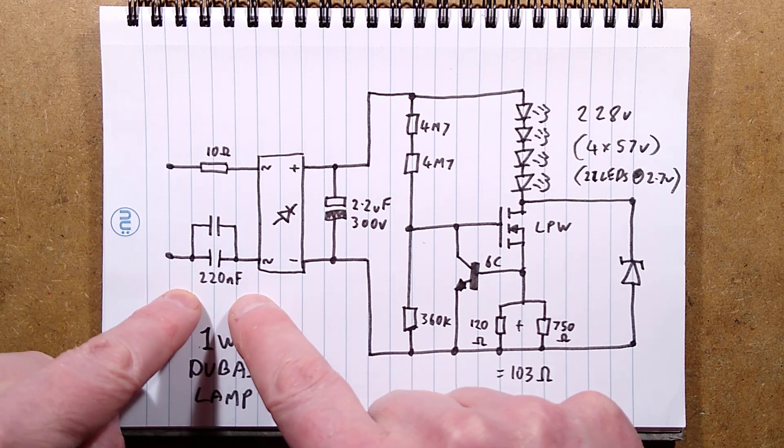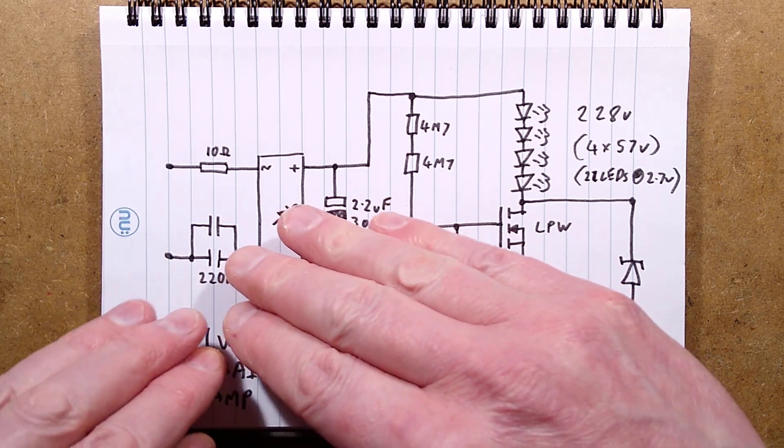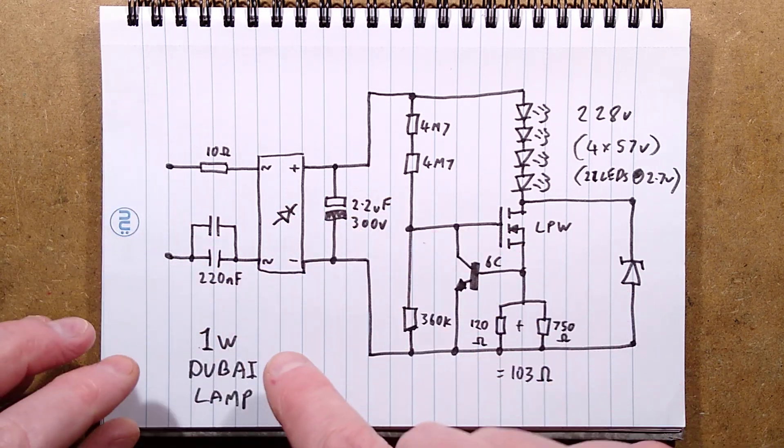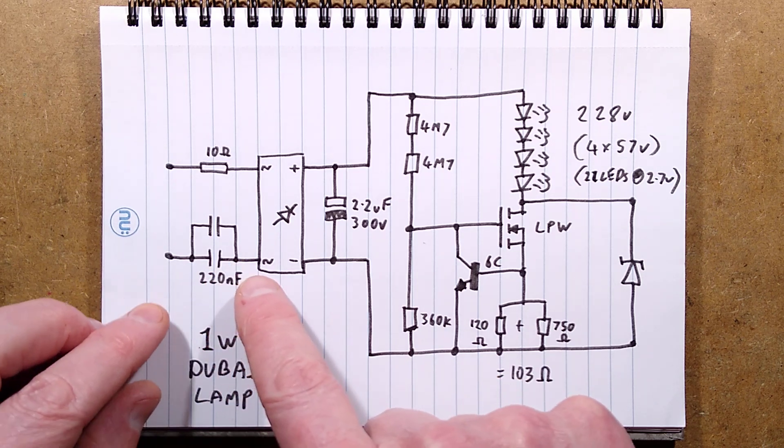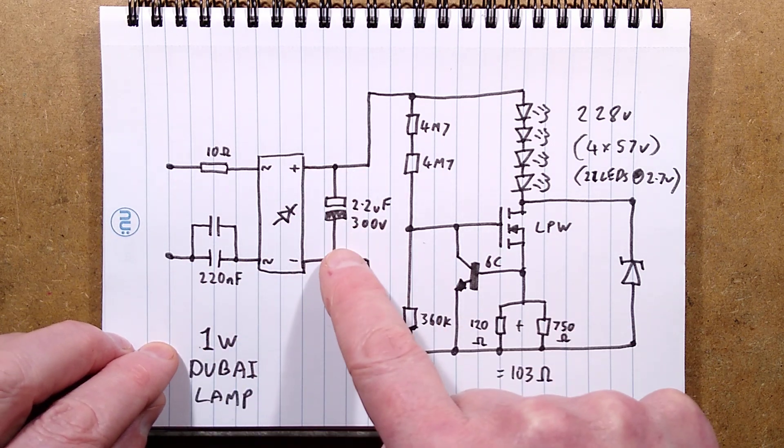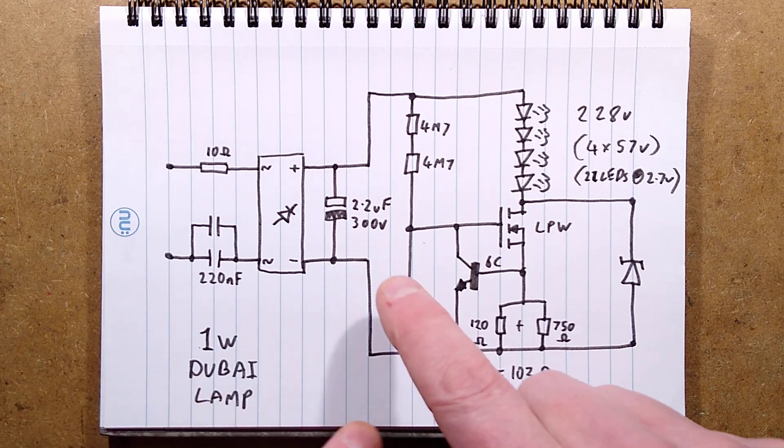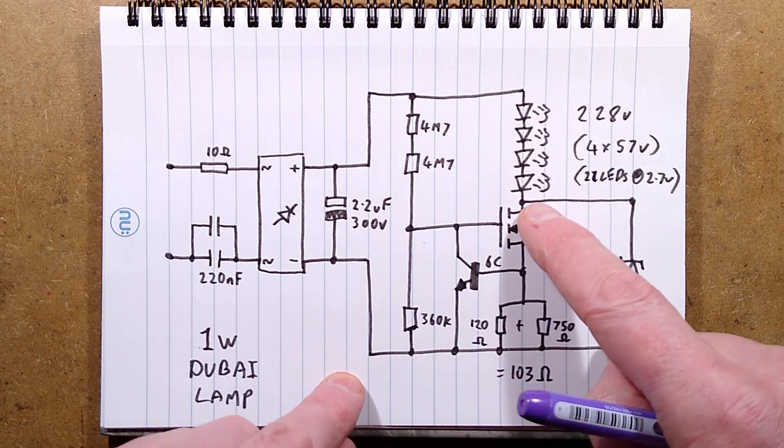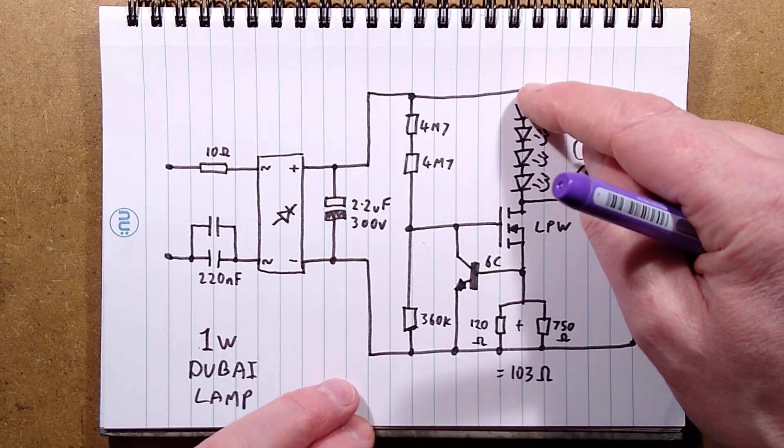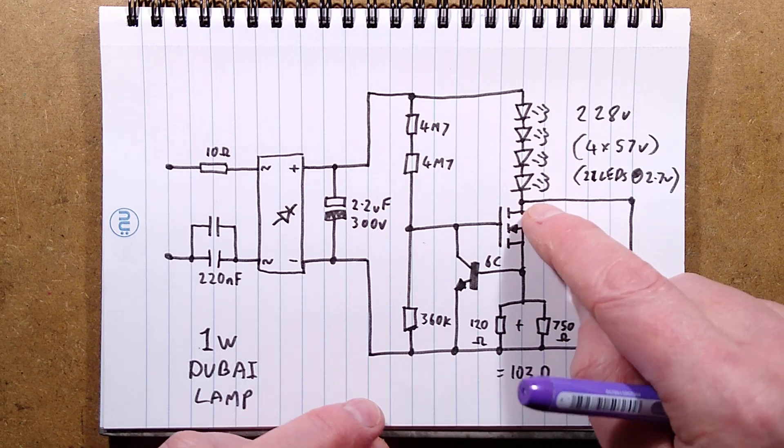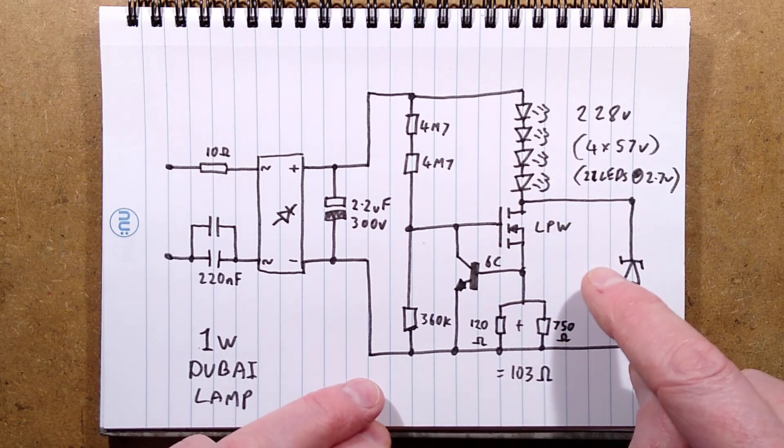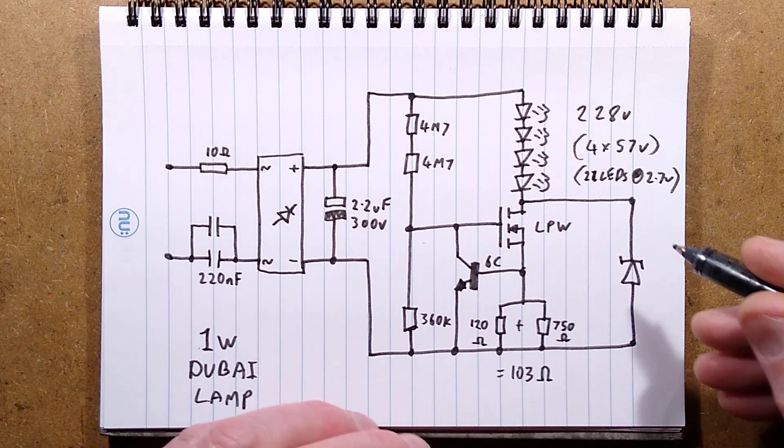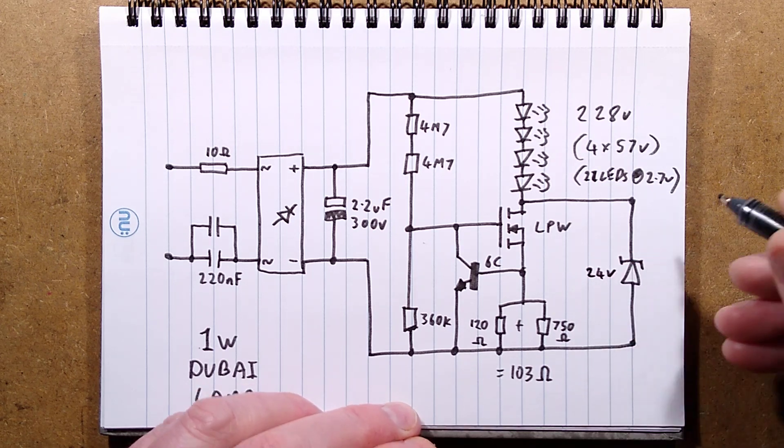We have the 220 nanofarad capacitor with the little snubber capacitor across that, and then we have the bridge rectifier. As the polarity of the mains changes, the AC allows a portion of current through on each half. That current is then used to charge this capacitor, which is then used to power these LEDs. There's 24 volts in here—the other one was.